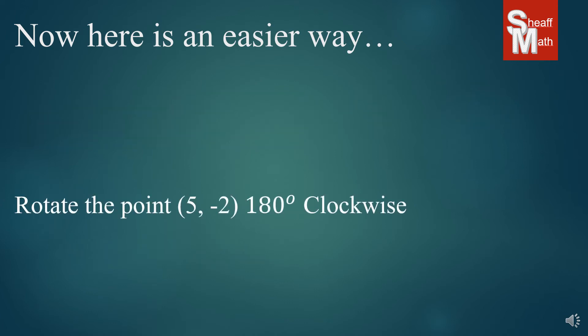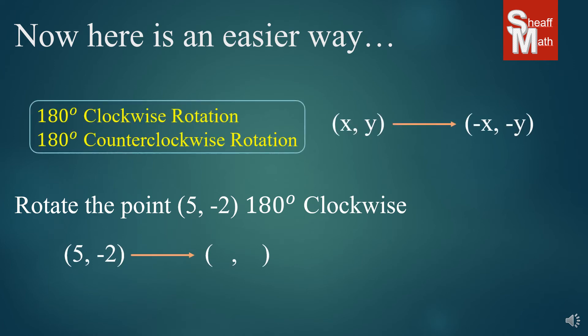Now let's say we were asked to rotate the point (5, negative 2) 180 degrees clockwise. We find our rule: xy changes to (negative x, negative y). So the x goes to the same position but turns opposite — 5 goes to negative 5. And the y does the same thing, it just turns opposite — negative 2 turns to positive 2. And that's how we do that one.